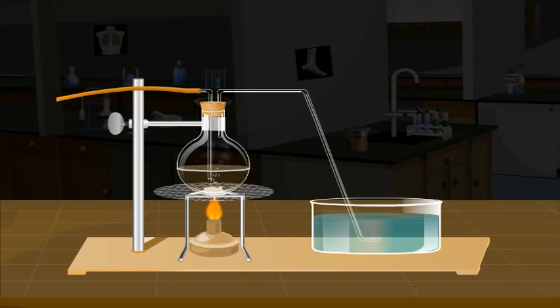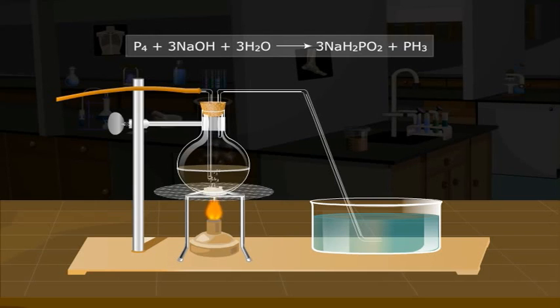What is the reaction which takes place? The reaction involved in the formation of the gas is P4 plus 3 NaOH plus 3 H2O gives 3 NaH2PO2 plus PH3.